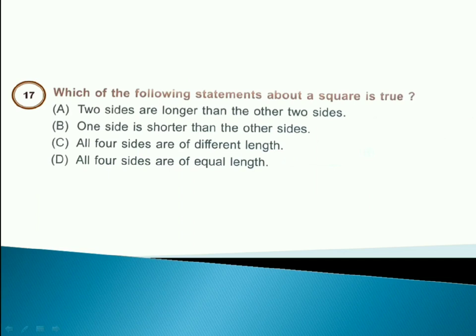Which of the following statements about a square is true? Answer is option D. All four sides are of equal length.